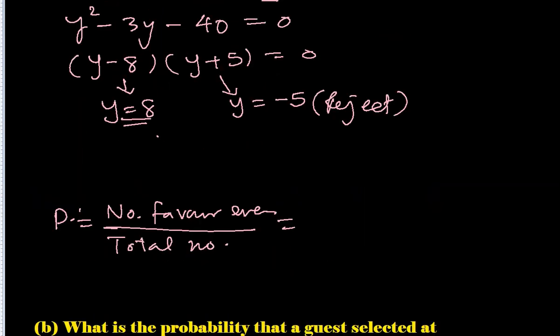Part b: What is the probability that the guest selected at random chooses either Yam or Plantain but not both? So for probability we should have numbers that favor the event and total numbers.